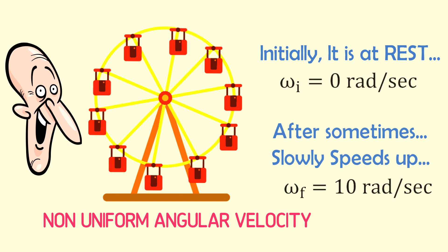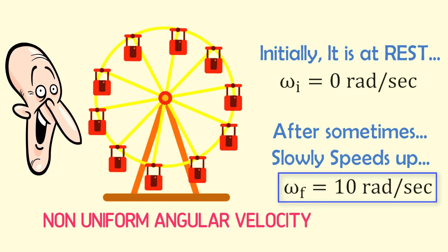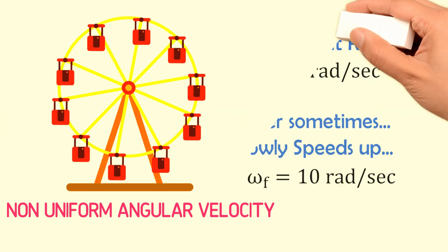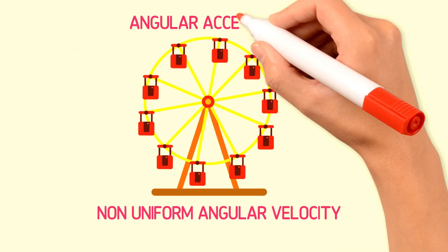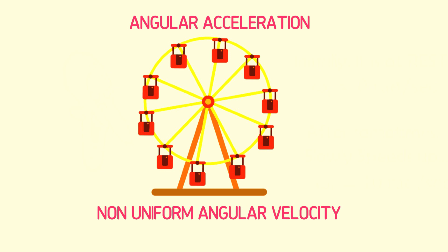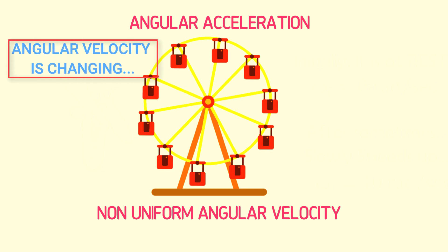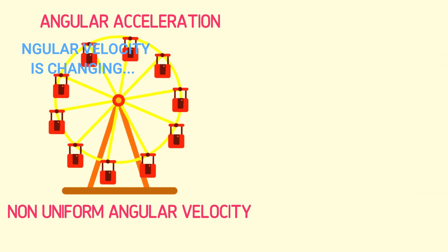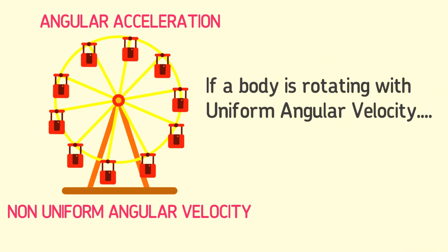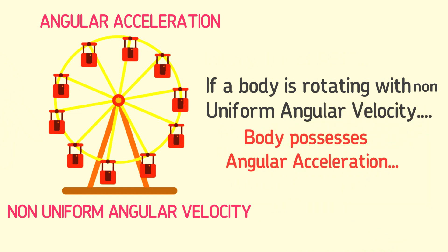In the case of the ferris wheel, the angular velocity changed from 0 radians per second to 10 radians per second with the passage of time. Hence, the ferris wheel rotates with non-uniform angular velocity. Remember: if a body is rotating with non-uniform angular velocity, the body must possess angular acceleration.